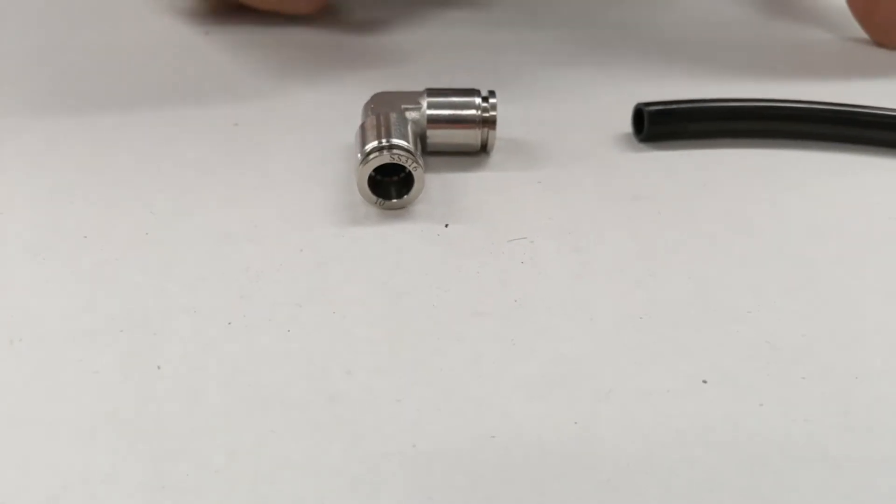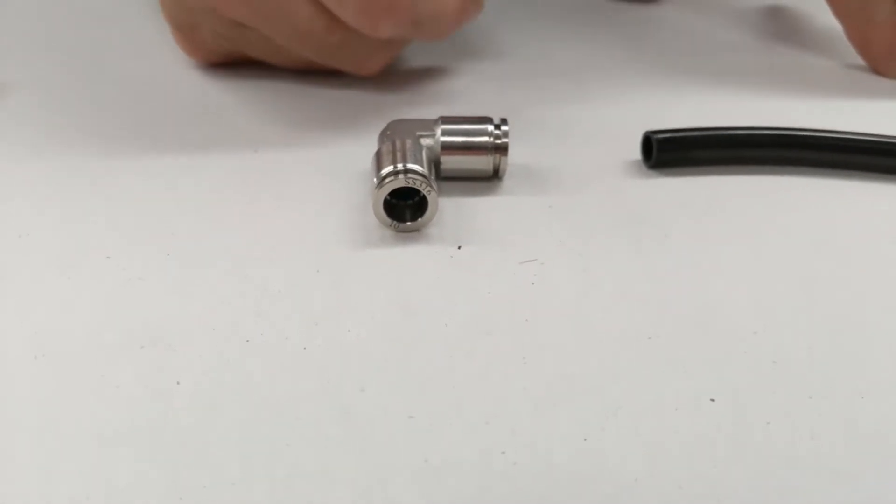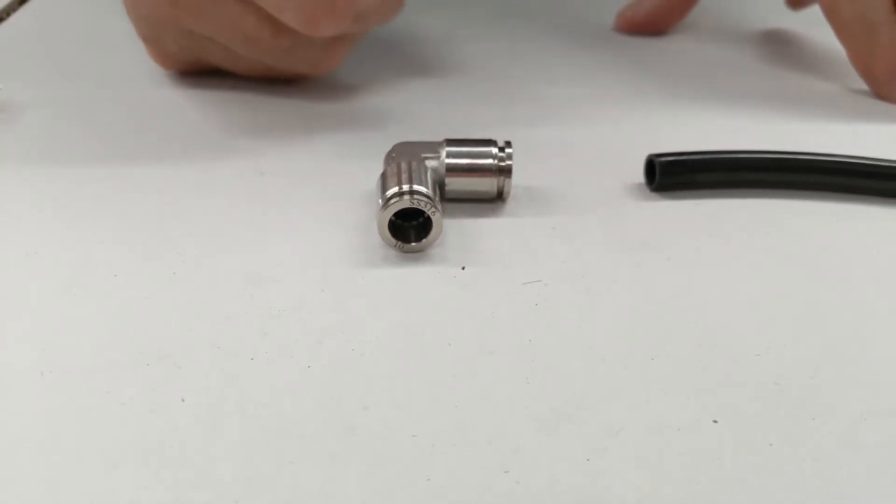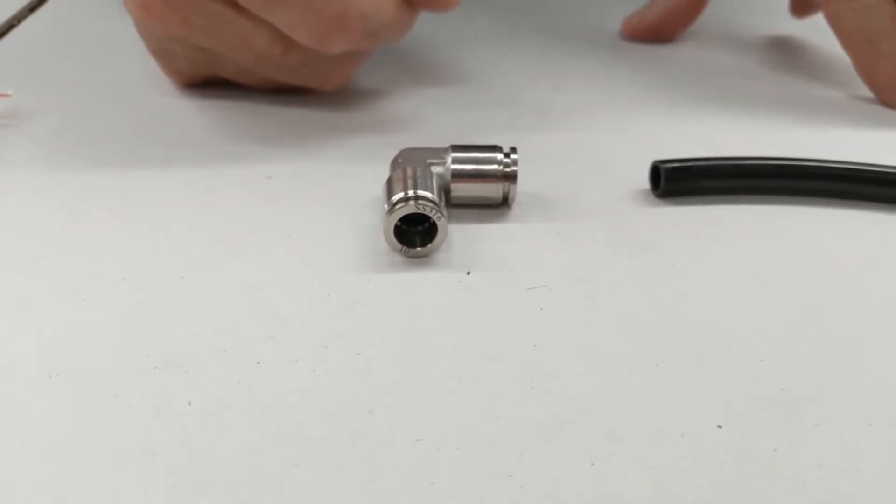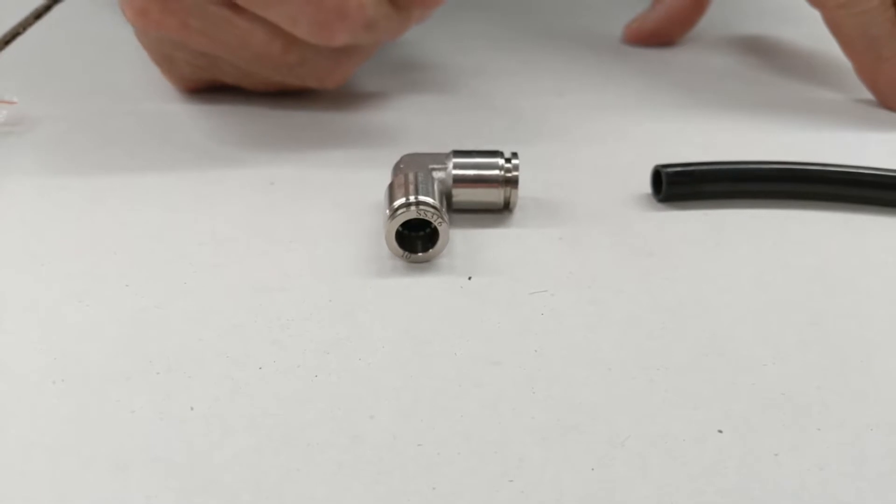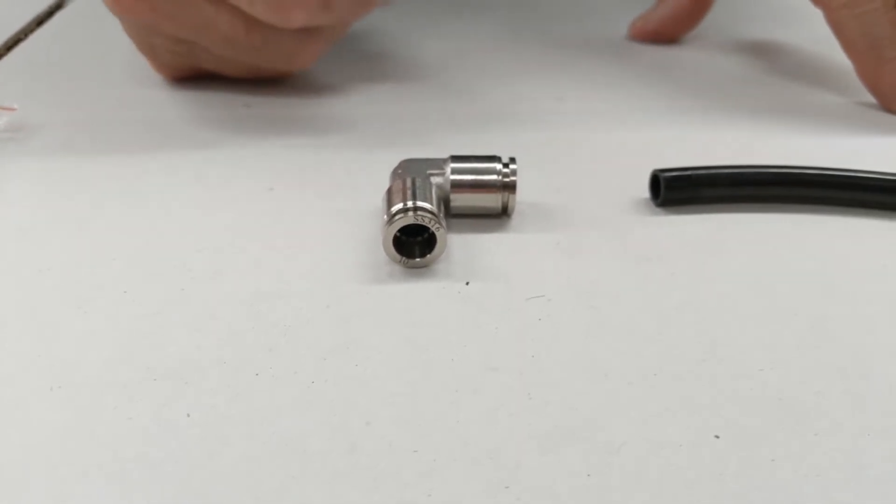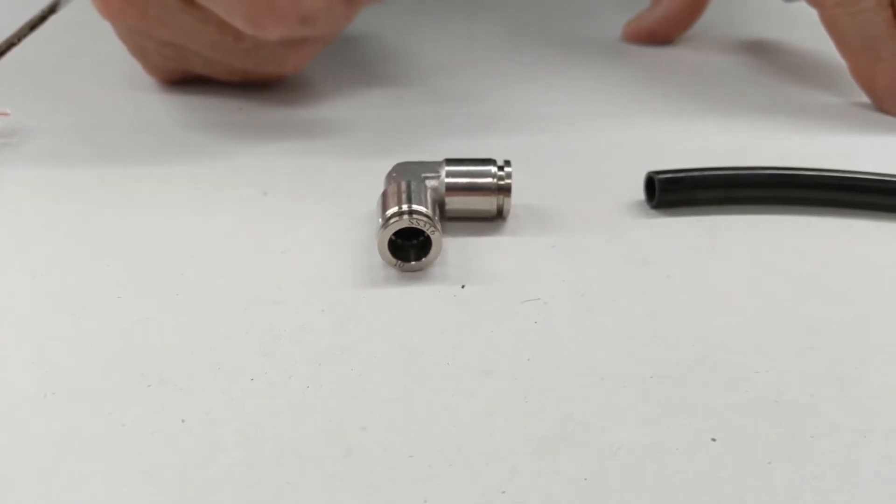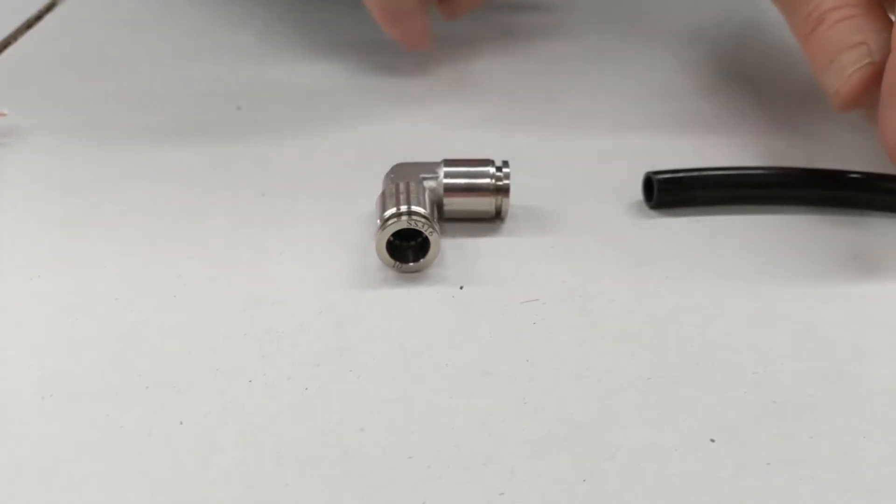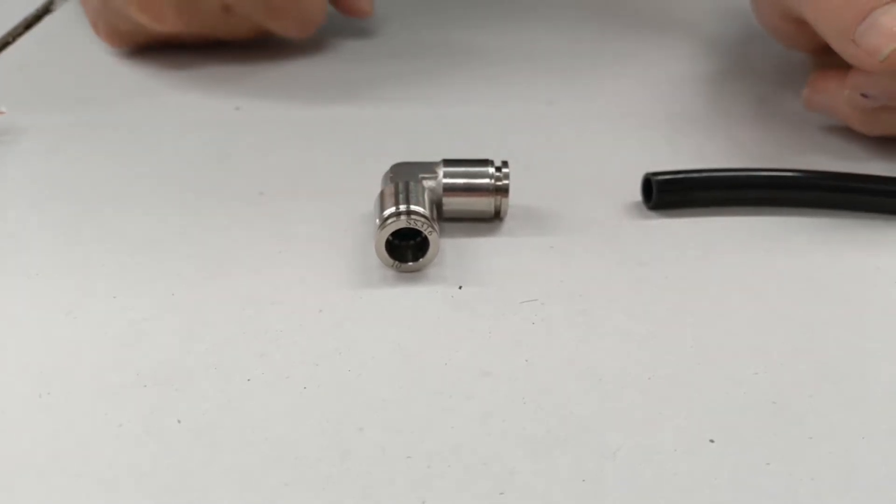This is our Process Systems SPS tube-to-tube elbow joiner with 316 stainless steel body, Viton FKM o-ring, 20 bar working pressure, and 120 degrees Celsius temperature rating. They're designed for connecting tube and come in a range from 4 mil to 12 mil connections.